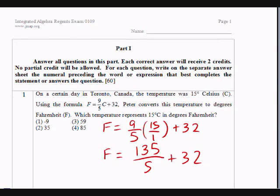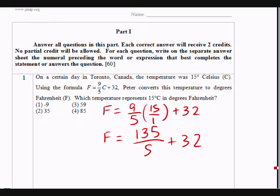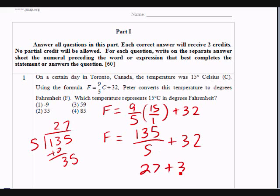I haven't worked these problems ahead of time, so I actually don't know the answers. Okay? So 135 divided by 5. I think that's 27, but let me make sure. Okay? And that is 2. Alright. So 35, 27. Okay. I'm correct. So this is 27 plus 32. So the answer is 59 degrees, right? And this is in Fahrenheit. And that is choice 3.